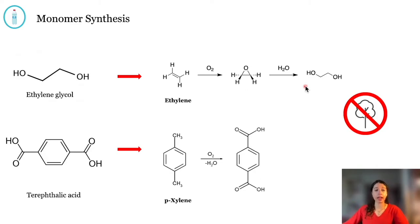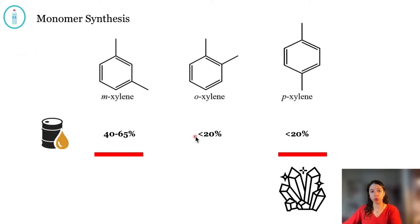On the other hand, terephthalic acid is directly formed from the oxidation of p-xylene, which is a fossil compound that can be found in crude oil.